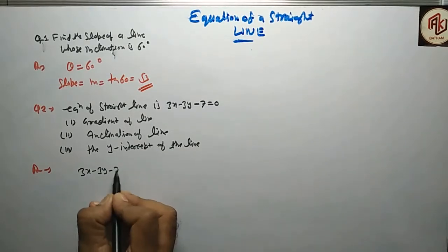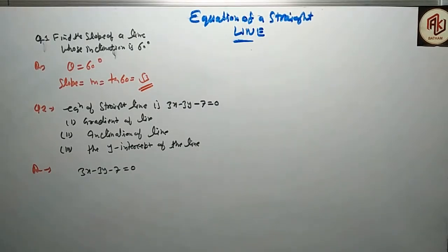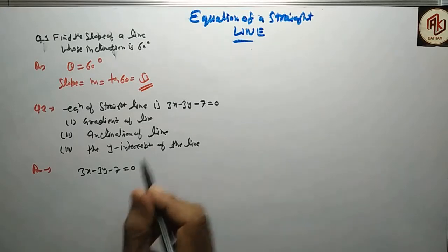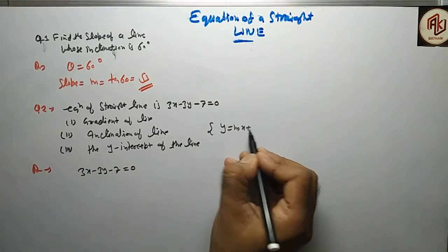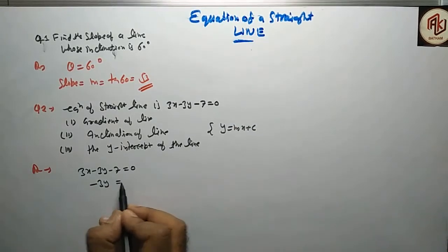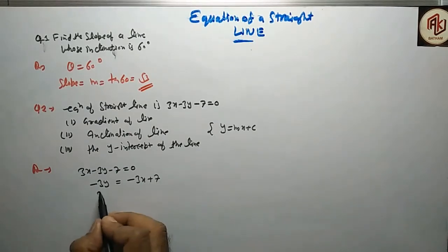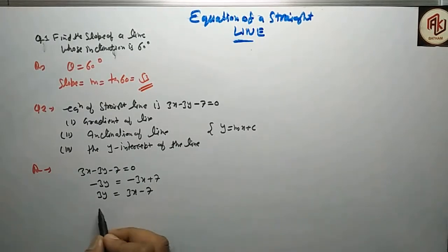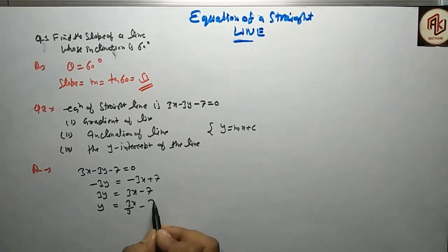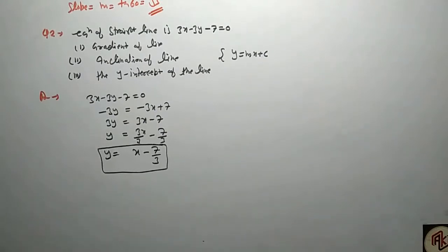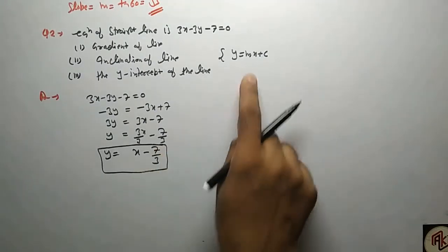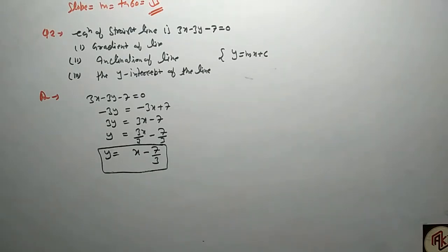The equation is 3x minus 3y minus 7 = 0. हम इसे slope form में बदलेंगे। Slope form होती है y = mx + c। तो यहाँ minus 3y = minus 3x + 7, जिससे y = x minus 7 by 3 आता है। तो यह हमारा slope form आ गया।